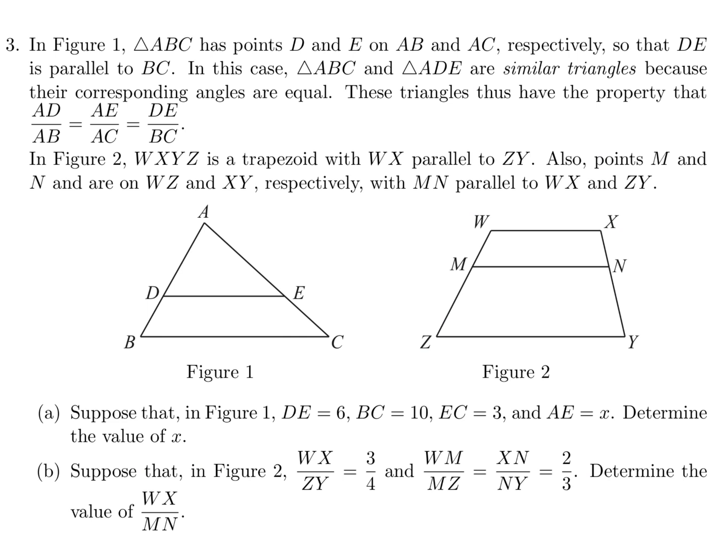In figure 1, triangle ABC has points D and E on AB and AC respectively, so that DE is parallel to BC. In this case, triangle ABC and triangle ADE are similar triangles because their corresponding angles are equal. These triangles thus have the property that AD over AB is equal to AE over AC is equal to DE over BC. In figure 2, WXYZ is a trapezoid with WX parallel to ZY. Also, points M and N are on WZ and XY respectively with MN parallel to WX and ZY. Suppose that DE is 6, BC is 10, EC is 3, and AE is x. Determine the value of x.